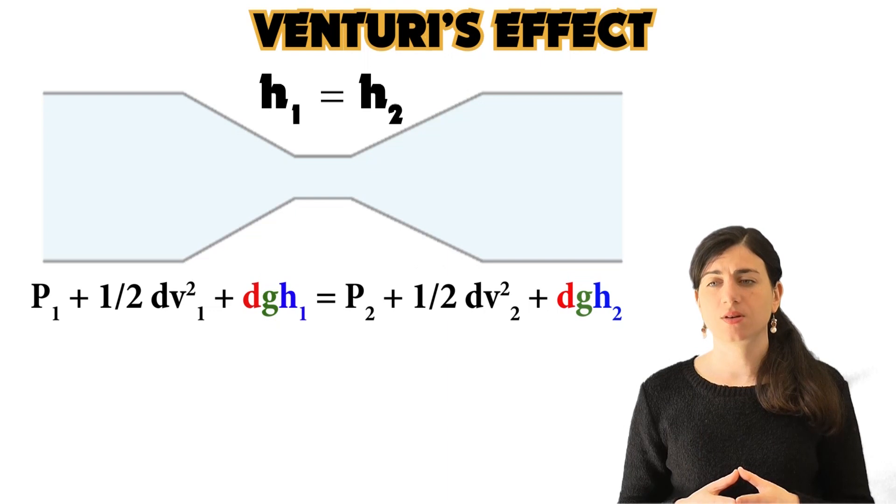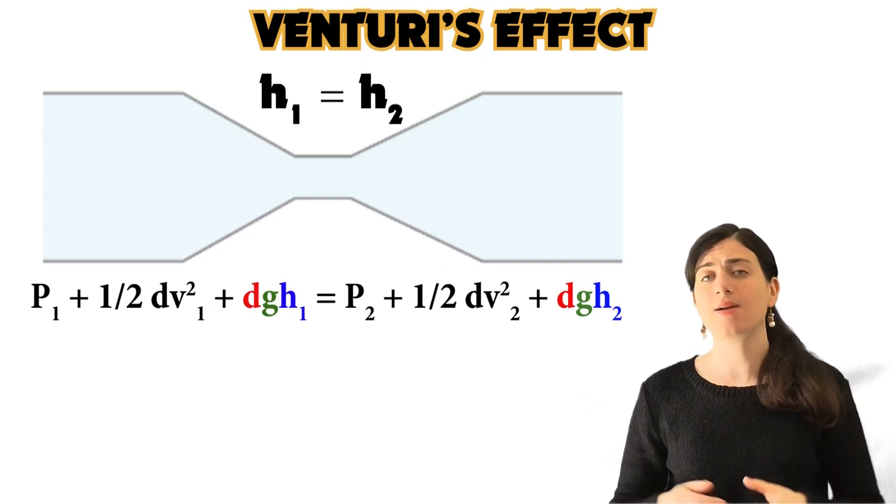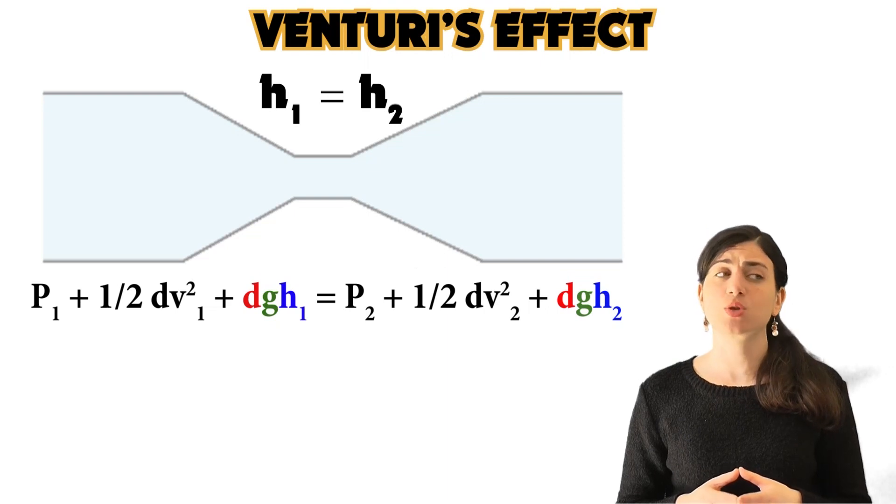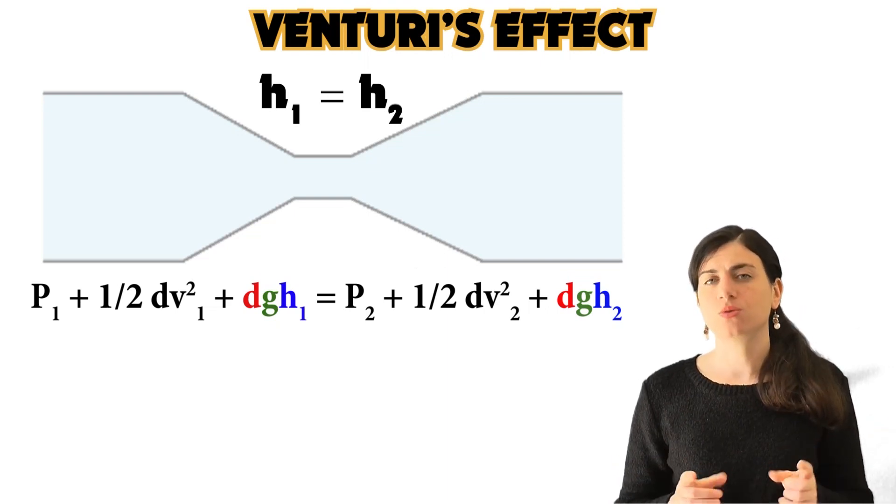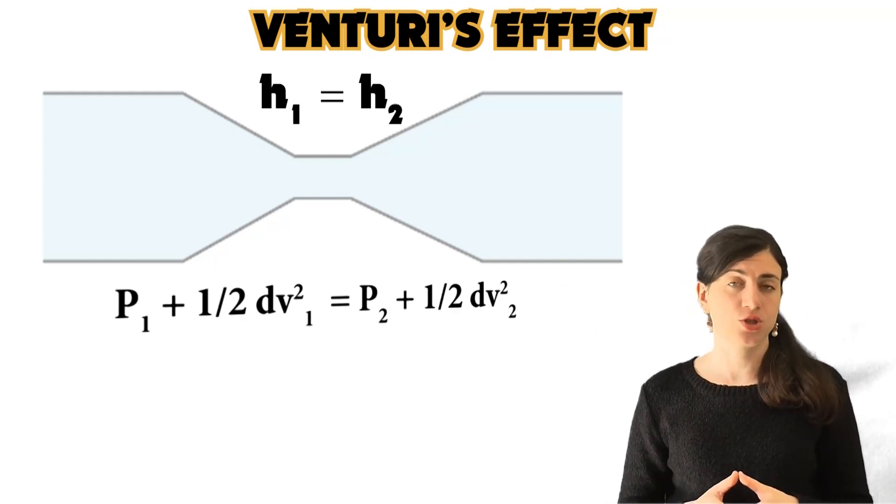And G, which is the gravitational constant, is the same, of course. So we can erase these two final terms of the Bernoulli equation. And now the Bernoulli equation will be turned into the so-called Venturi equations.